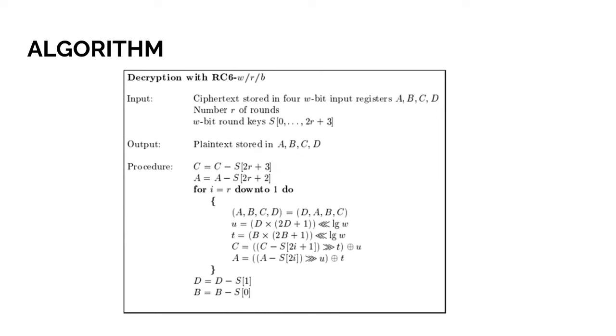Next we will talk about the algorithm for decryption with RC6. The input will be ciphertext stored in four w-bit input registers ABCD, number R of rounds, w-bit round keys S0 till 2r plus 3. Then the output will be plaintext stored in ABCD. The procedure will be C equals C minus S(2r plus 3), A equals A minus S(2r plus 2). For i equals r down to 1.